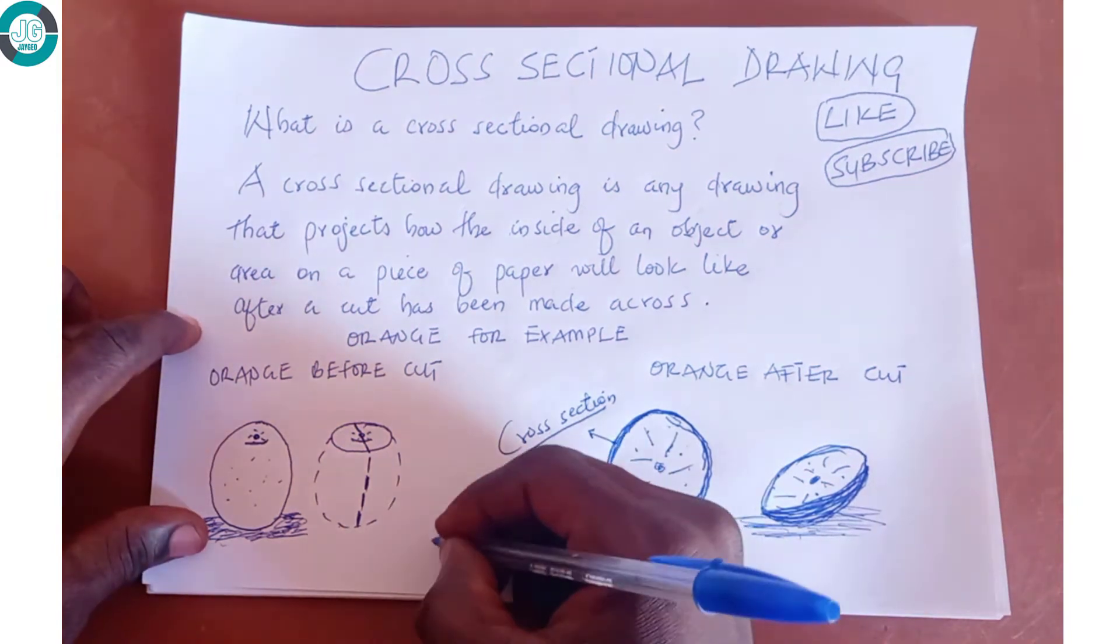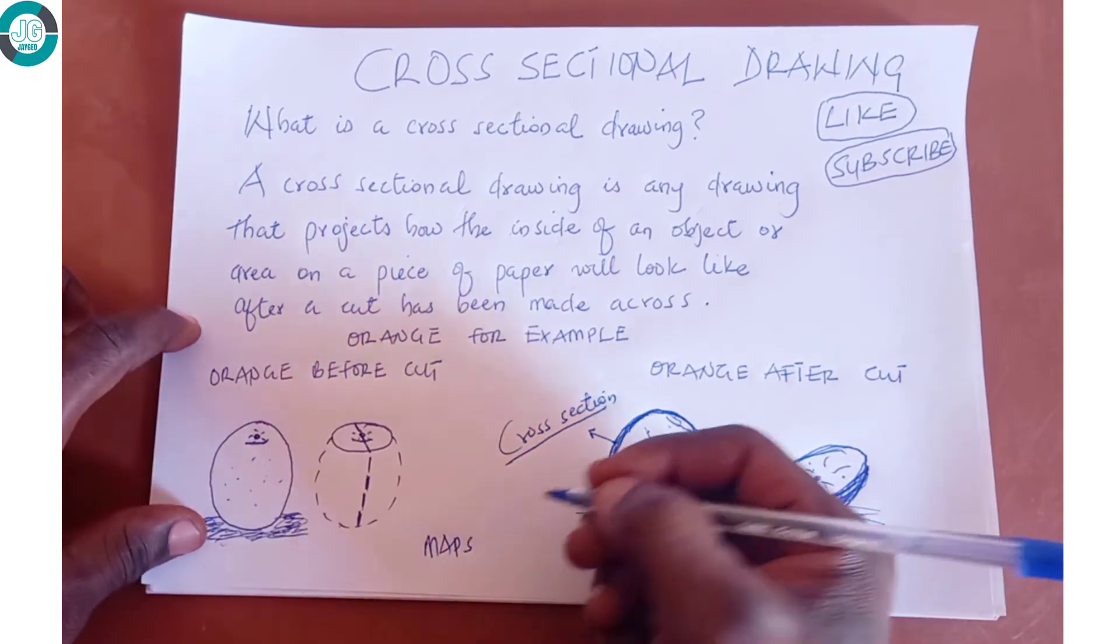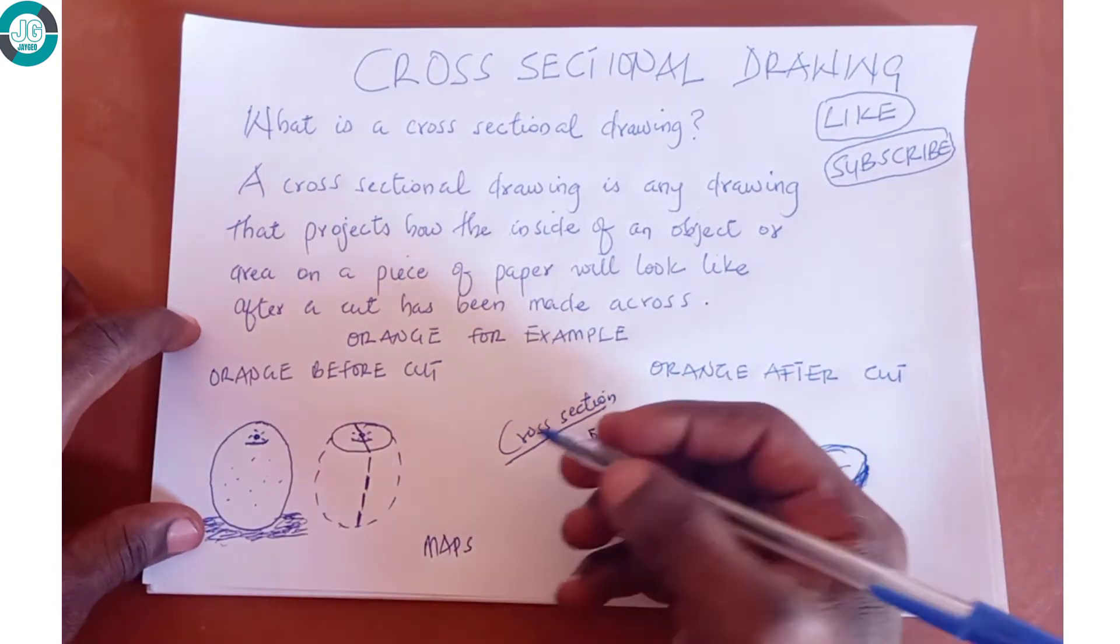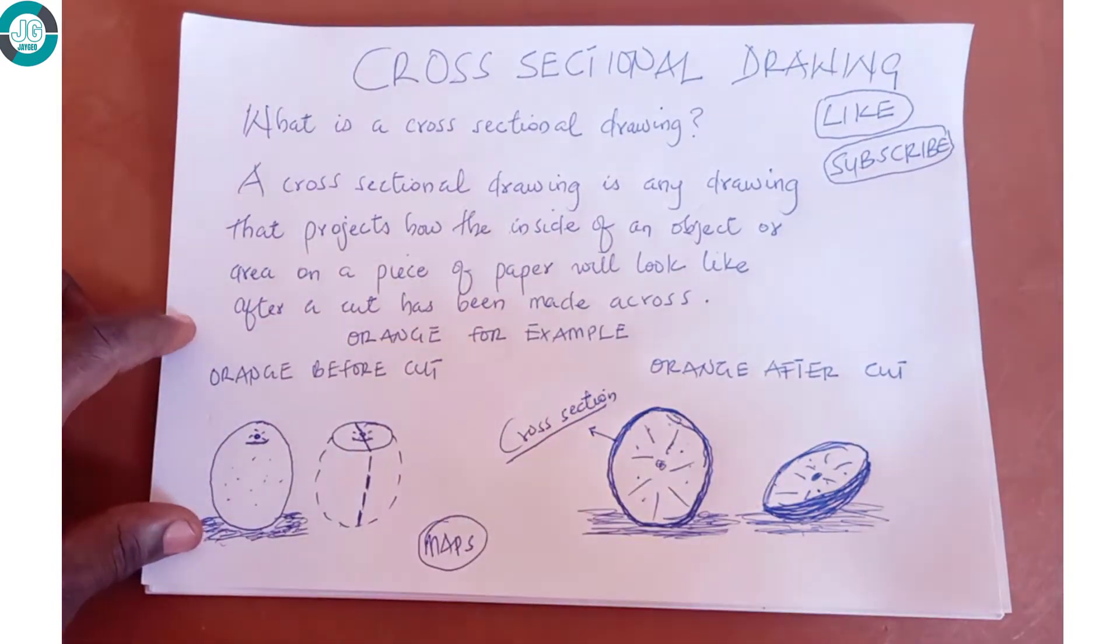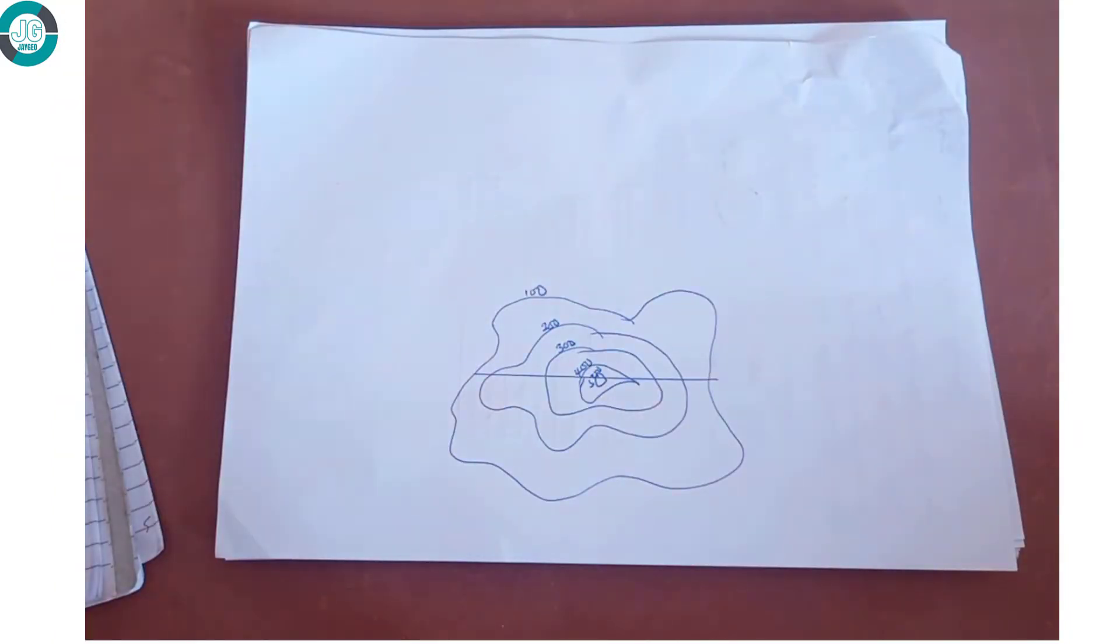Similarly, we can also draw cross-sections of areas or objects on maps. Just as we did to our orange, first of all we draw a line, say line AB, across the area of the map.